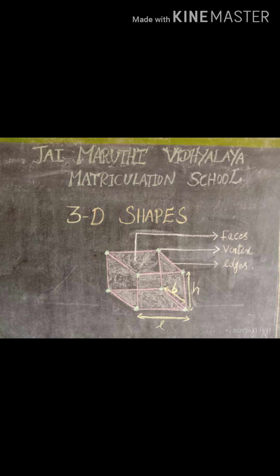Look at the picture and count the number of dotted points — that is called a vertex. Cube has 8 vertices. And next, look at the picture and count the number of lines — that is called edges. So we have 12 edges. Finally, cube has 8 vertices and 12 edges.